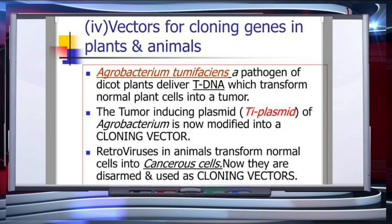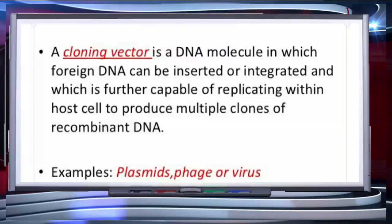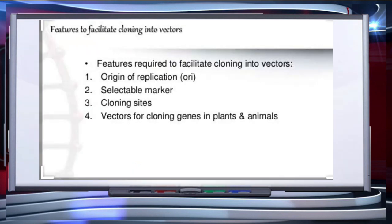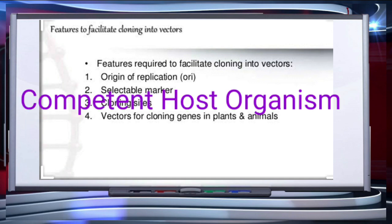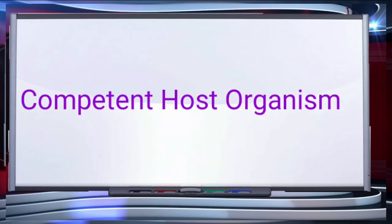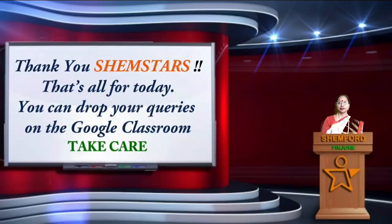Retroviruses and adenoviruses are also now used as cloning vectors in animals because of their ability to transform normal cells into cancerous cells. So this is all about cloning vectors — plasmids, bacteriophages, cosmids — and the features required to facilitate cloning into a vector.